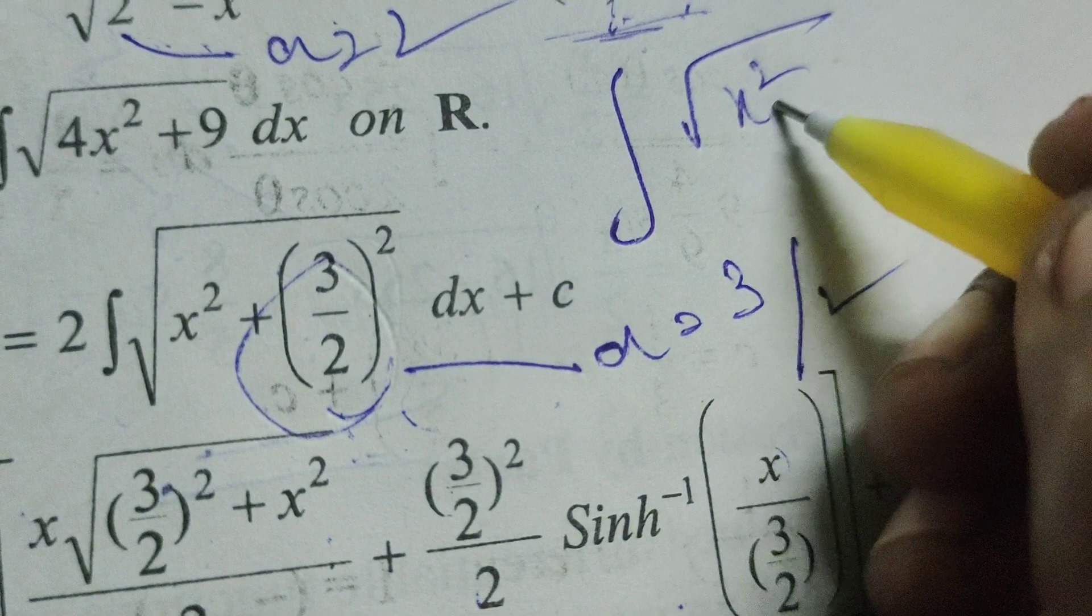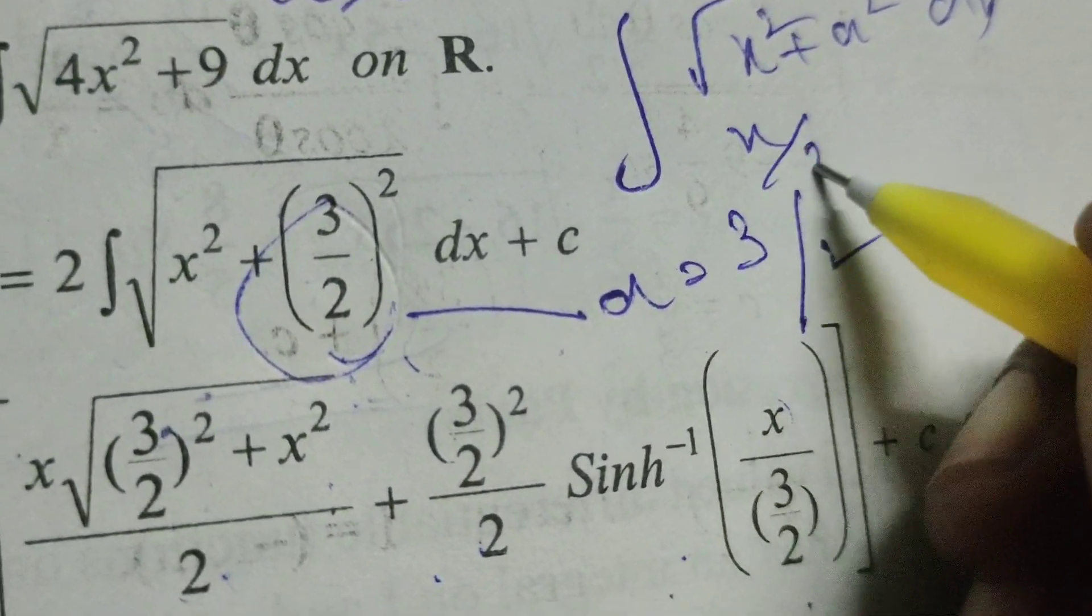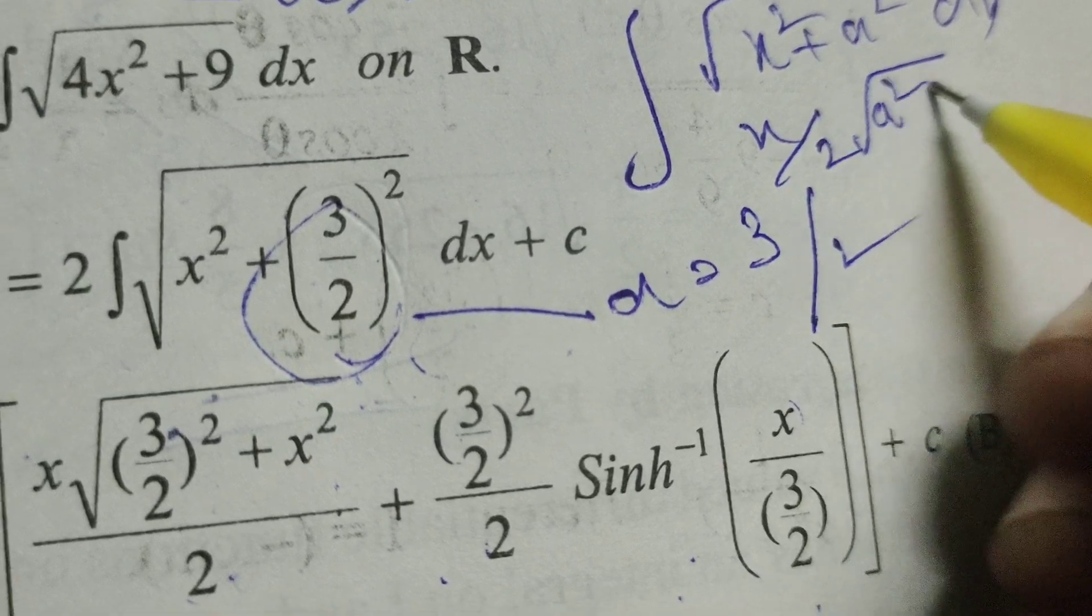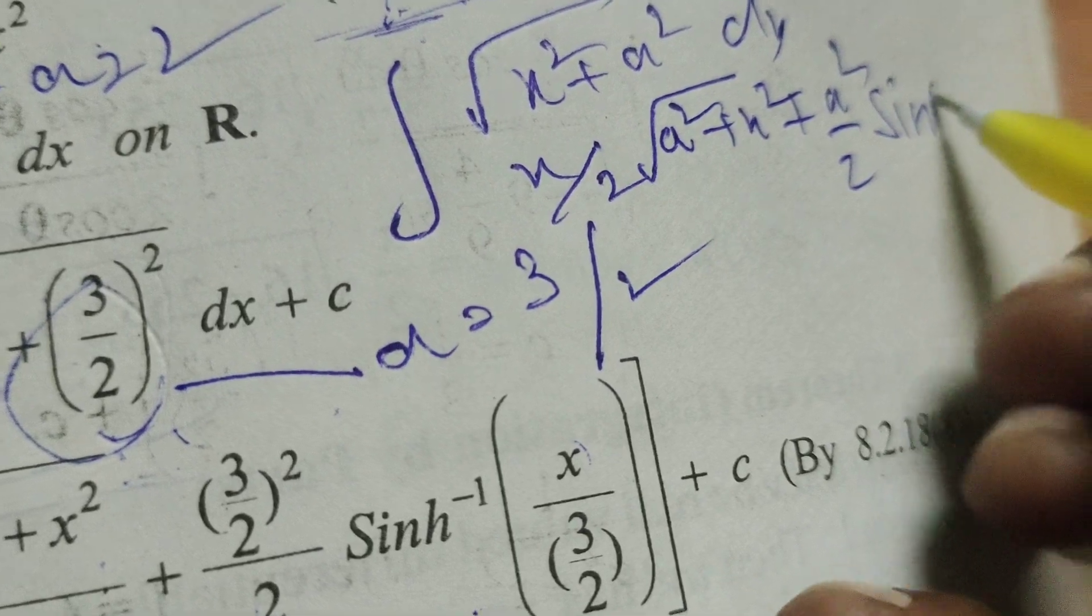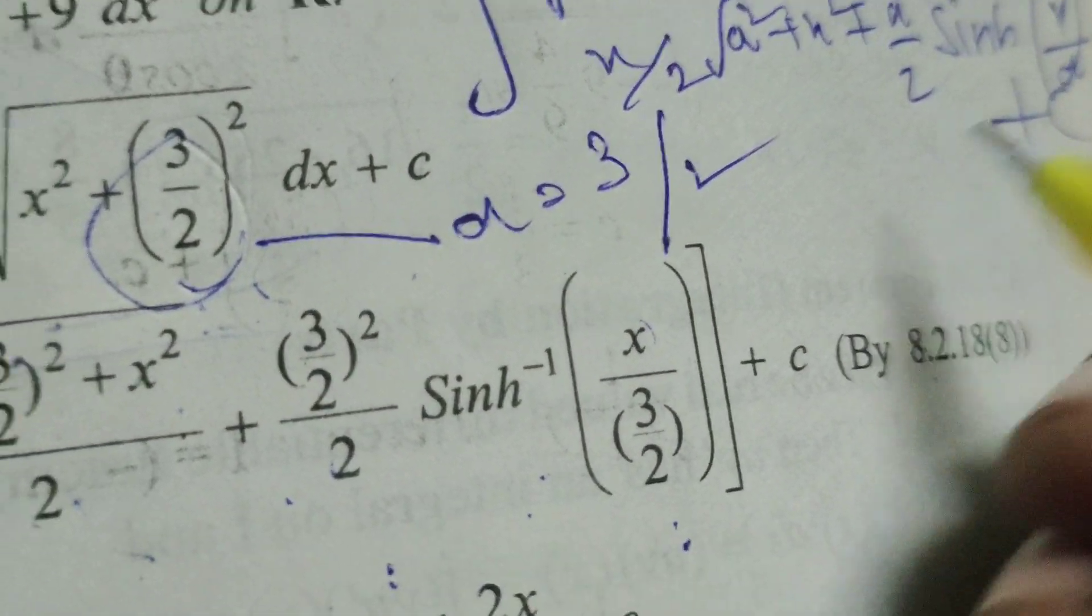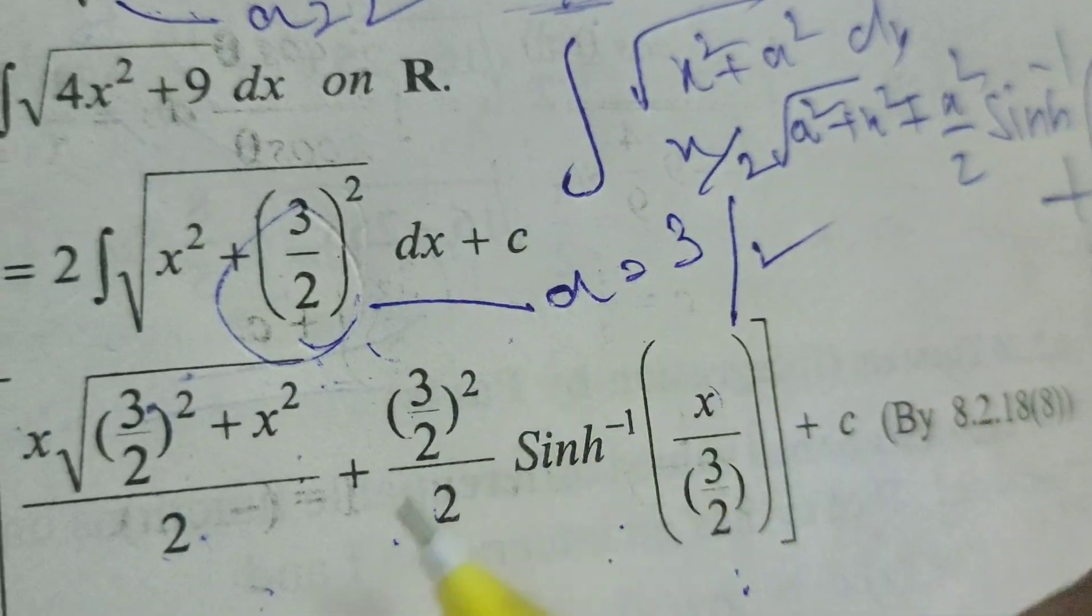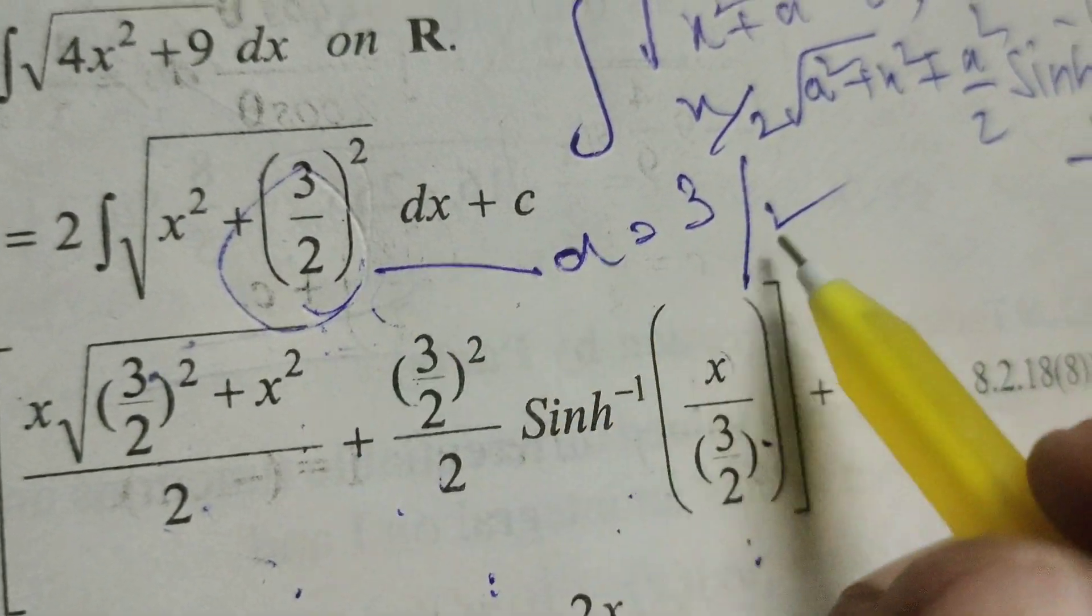What is the formulae: integral of root of x squared plus a squared dx means x by 2 root of a squared plus x squared plus a squared by 2 sinh inverse of x by a plus c. So using this formulae, here write a means 3 by 2.